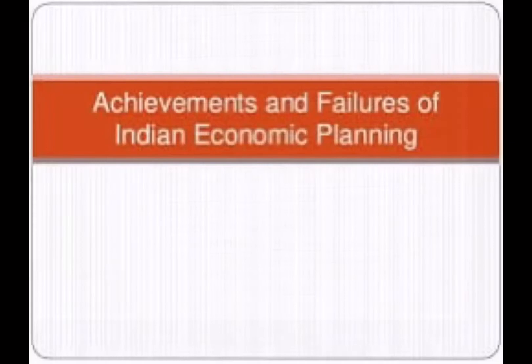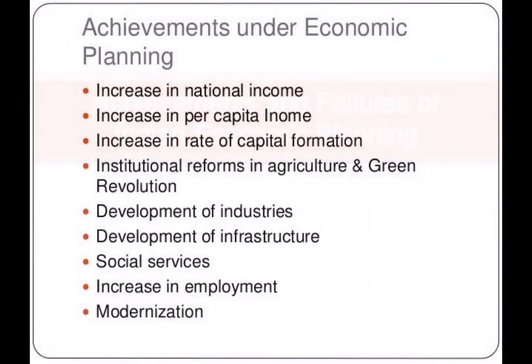Now let's discuss the achievements and failures of Indian economic planning. Under economic planning there were various achievements. There was an increase in national income, which indicates economic growth. Although during most plans we failed to achieve the targeted rate of growth, we still performed better than before. There was also an increase in per capita income over time — during the First Plan it was 2.7 percent, whereas during the last plan it was 5.5 percent.